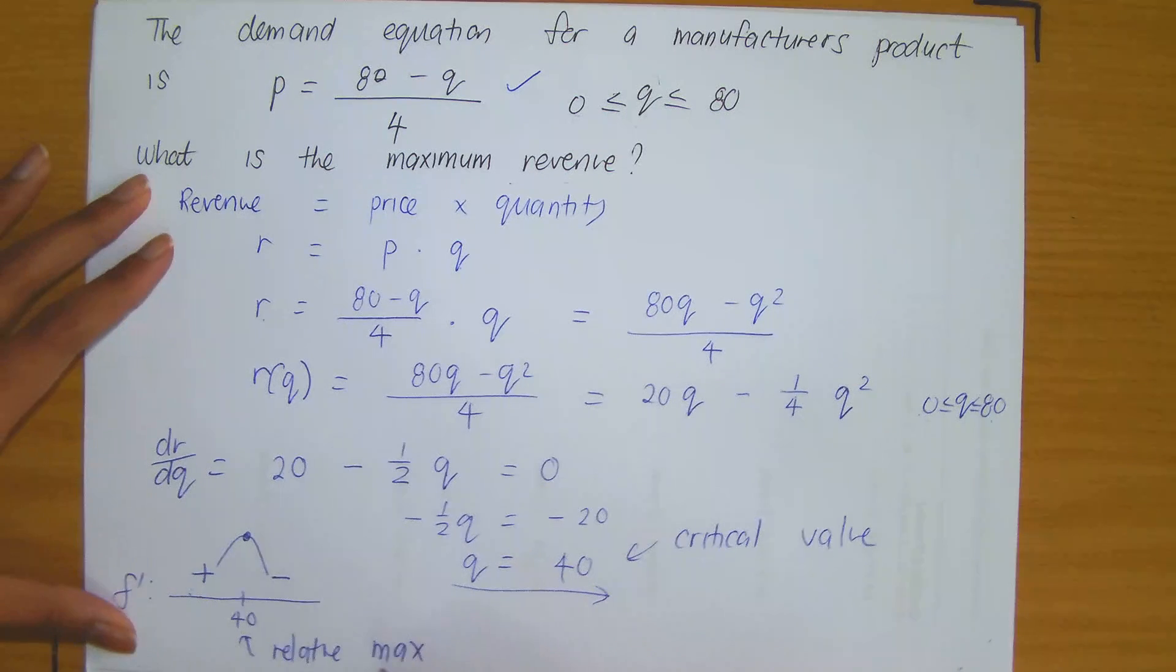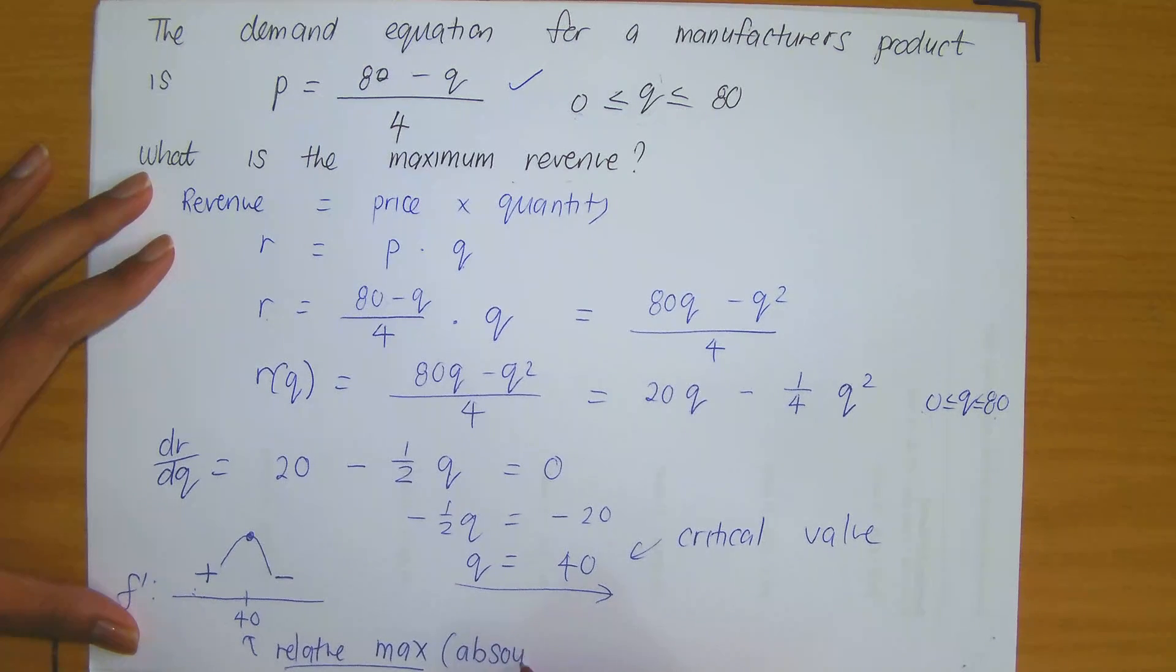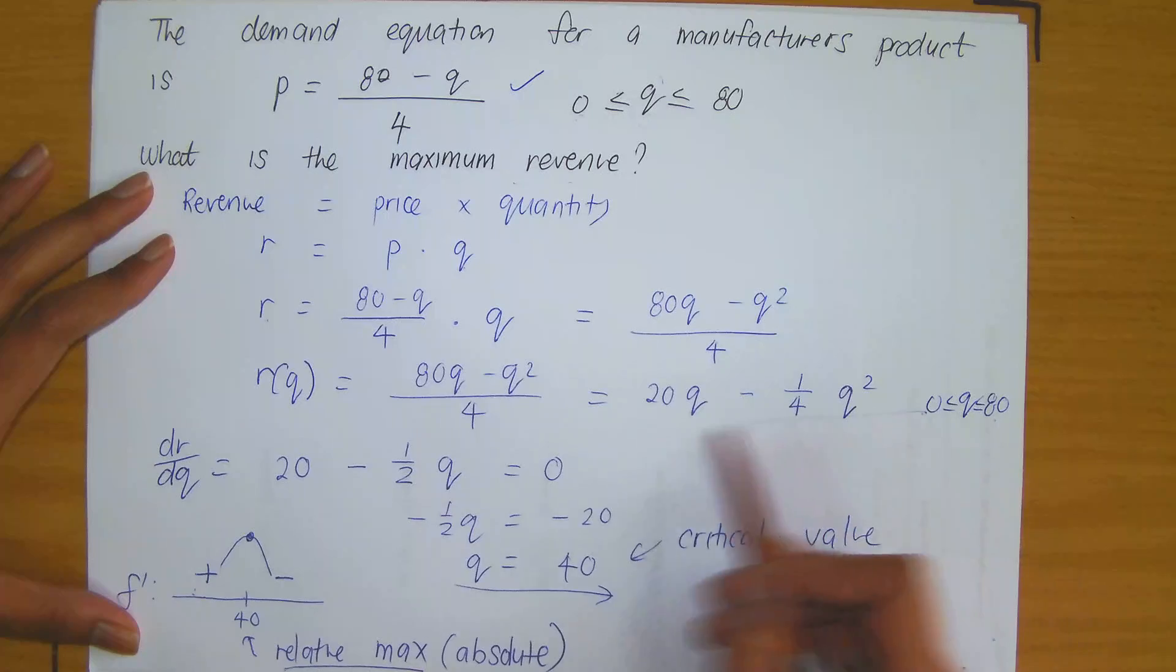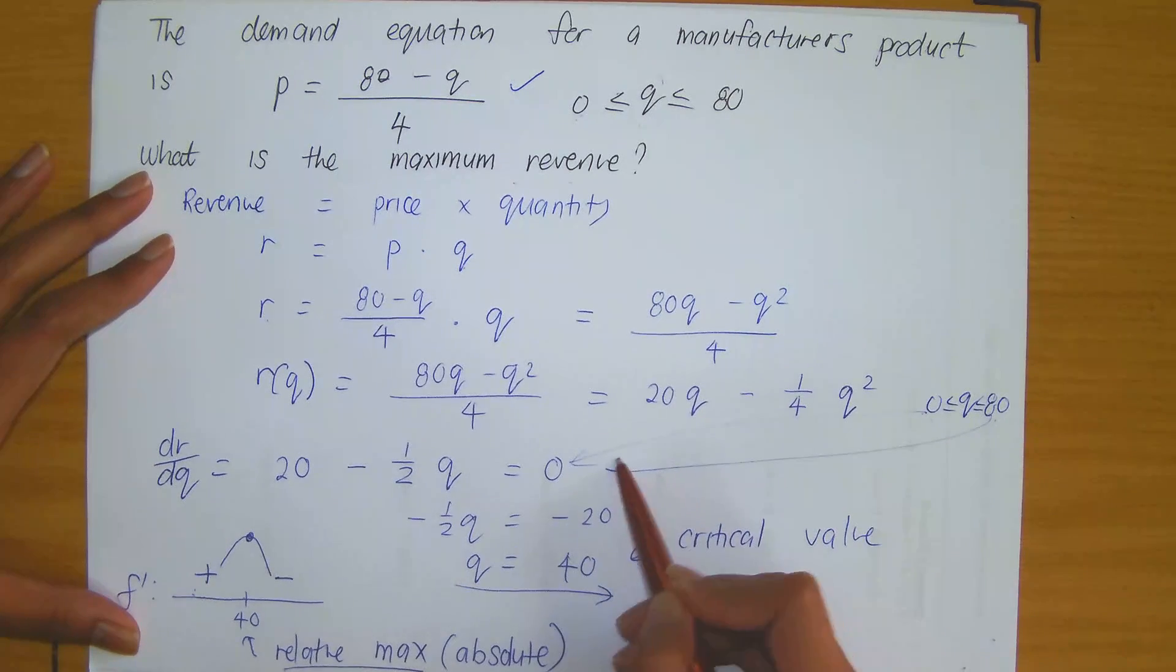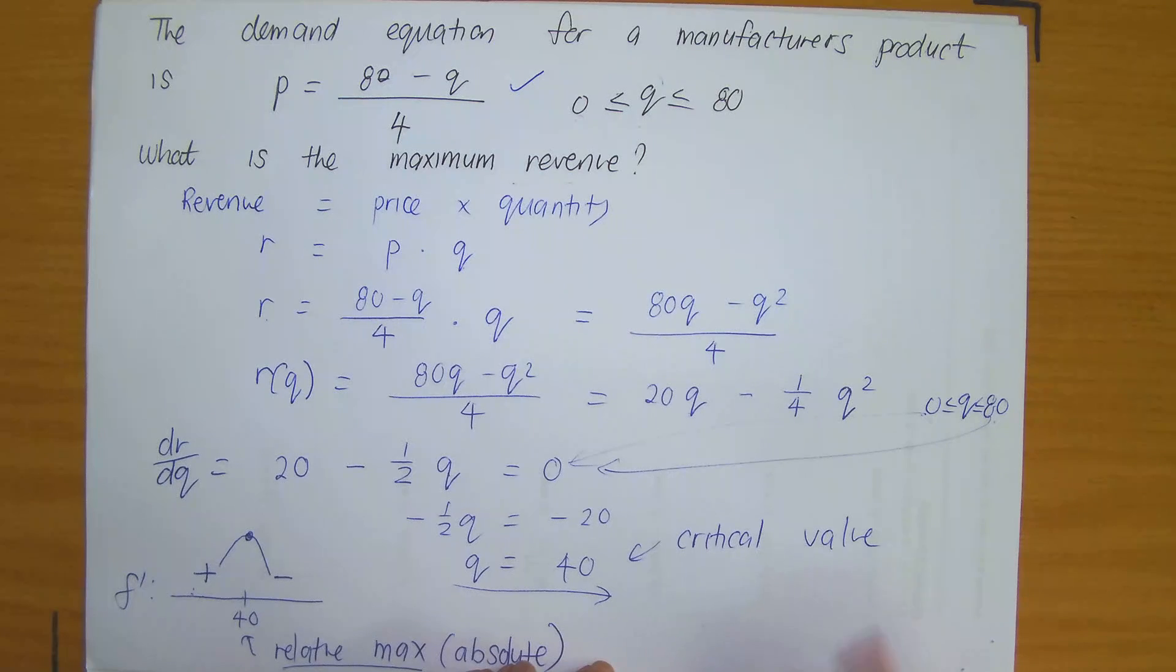So that means that this is not just a relative maximum. This is an absolute maximum because it was higher than all of the values I had obtained when I plugged in 0 and when I plugged in 80. So that means the revenue, step 5, I'm now interpreting my answer and answering the question.